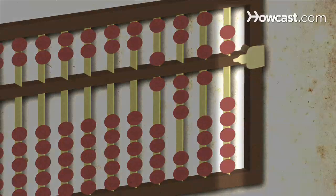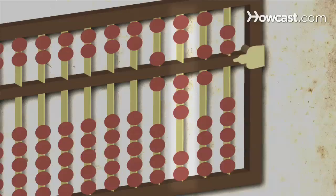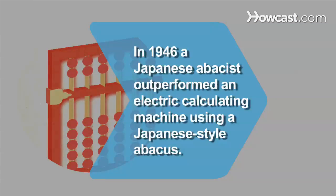Step 5. Continue counting in the same manner using columns to the left to represent numbers of increasing value. From right to left, the first vertical column represents units, the next represents tens, then hundreds, and so on.